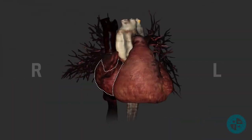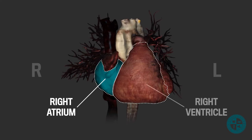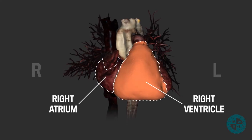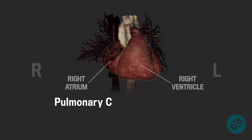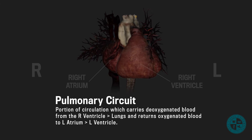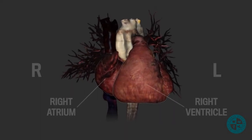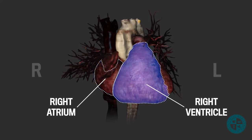The right side of the heart, which consists of the right atrium and right ventricle, will pump blood to the pulmonary circuit. Blood that is collected by the right atrium and then pumped out by the right ventricle has a low concentration of oxygen, so its next stop is going to be the lungs so it can pick up more oxygen in order to keep our cells alive.